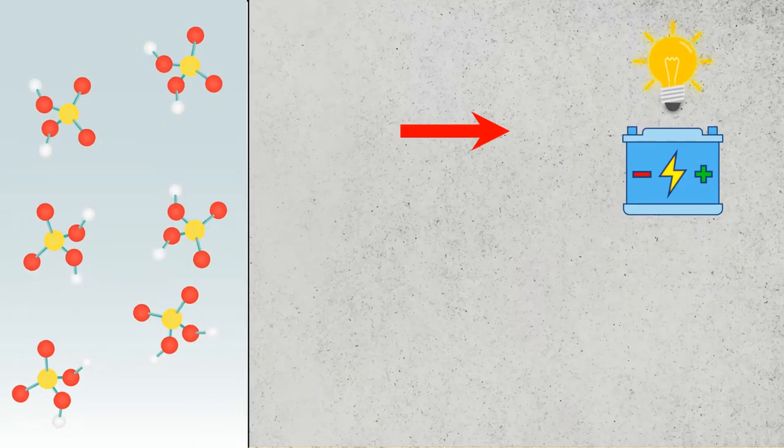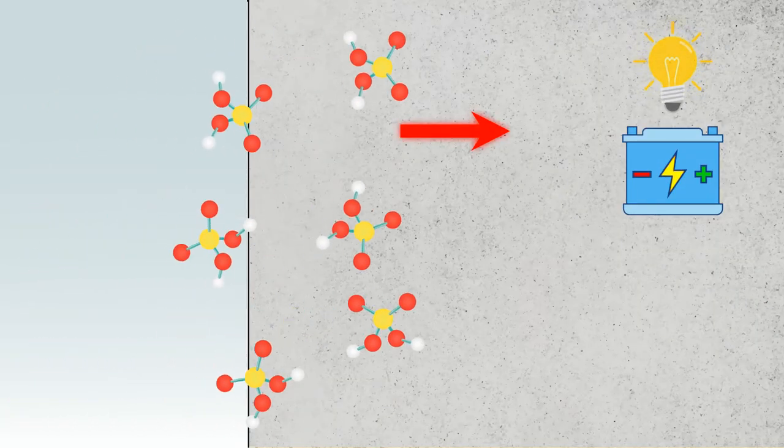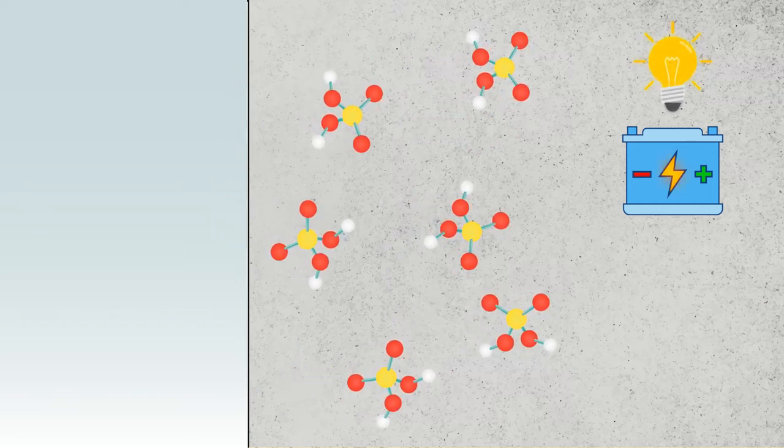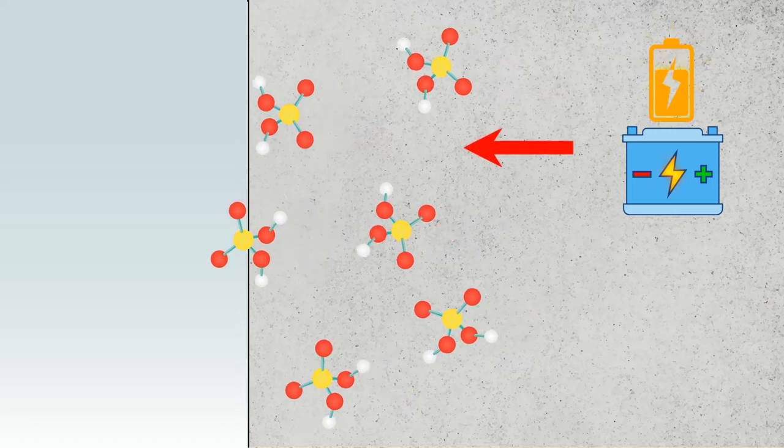When a battery discharges, the sulfuric acid in the electrolyte seeps into the lead plates, creating the battery's energy output. Recharging draws the sulfuric acid back into the electrolyte, restoring the battery's charge.